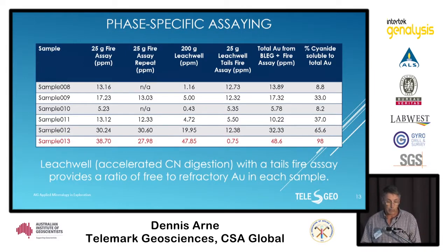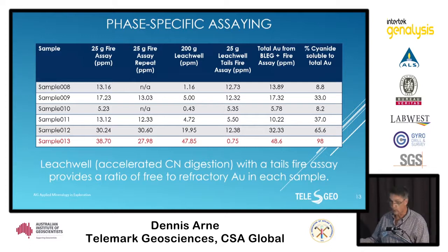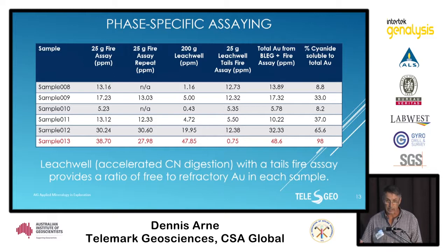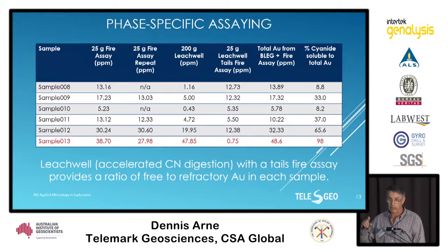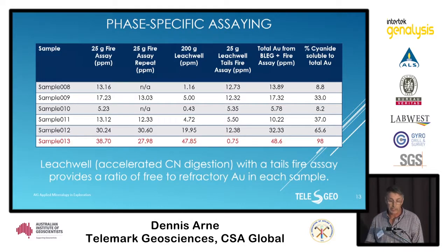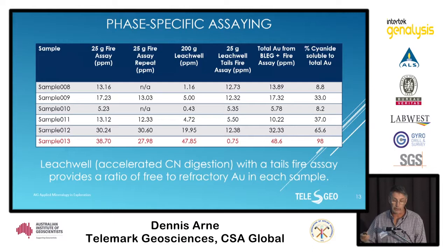One thing we did on this project was leach well analysis. You can see two columns with the standard 25-gram fire assay — and in some cases a repeat — then a 200-gram accelerated cyanide leach well, and then a fire assay of the tails using a 25-gram fire assay. You can combine the two values to get a complete gold value for a 200-gram sample, giving better precision through the bulk sample. In addition, we get the percentage of cyanide-soluble gold, which varies considerably from less than 10% to as much as 98%. Some samples from the leach well analysis also return slightly higher grades than the original 25-gram fire assays.